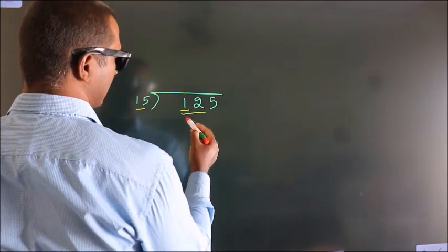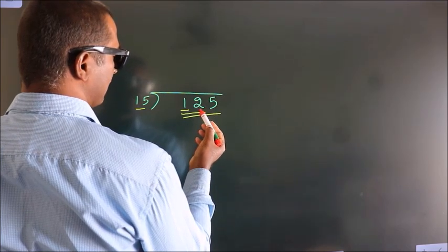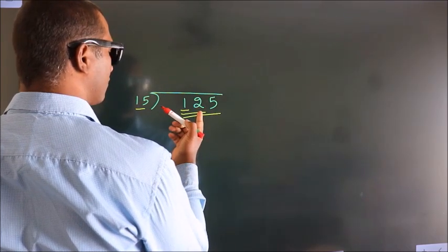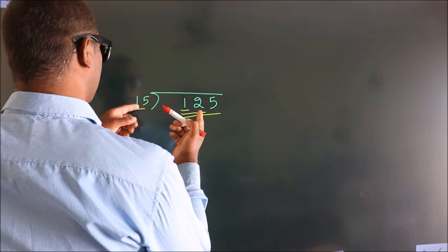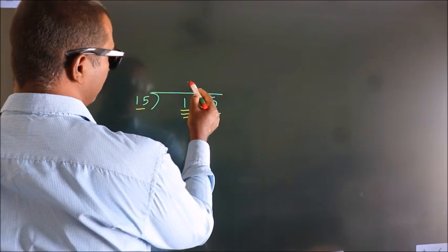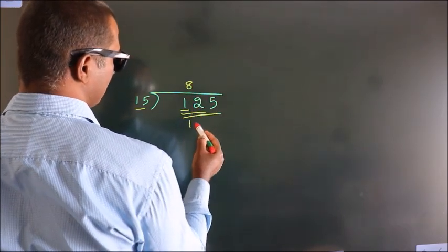So we should take 3 numbers. That's 125. A number close to 125 in the 15 times table is 15 times 8, which is 120.